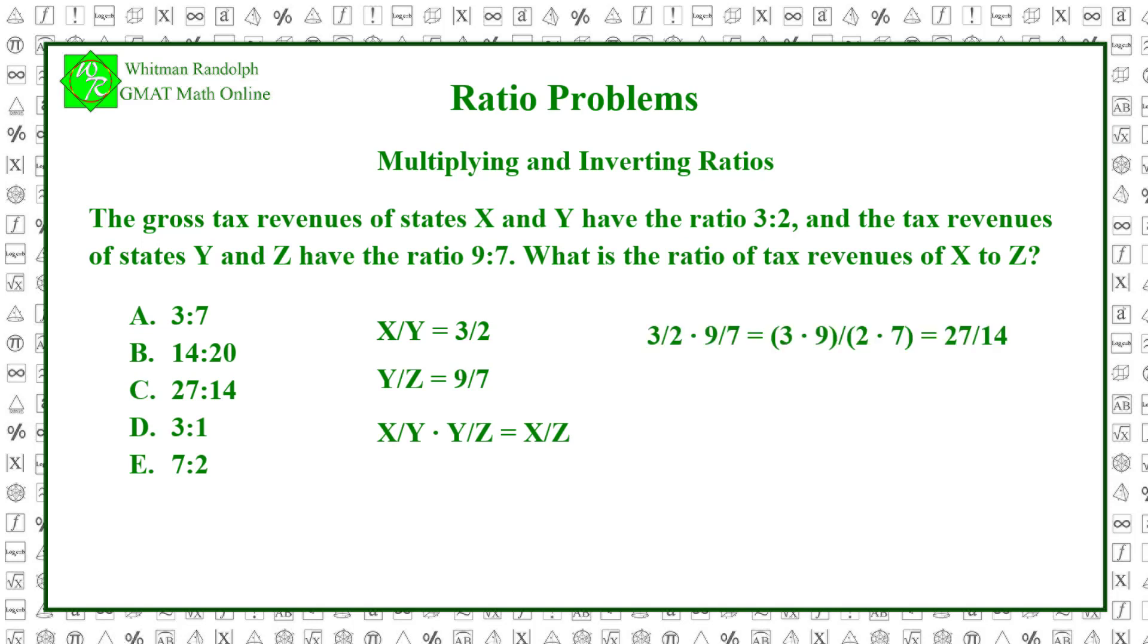Or, 3 halves times 9 sevenths equals 3 times 9 over 2 times 7, which equals 27 over 14. So the correct answer is C.